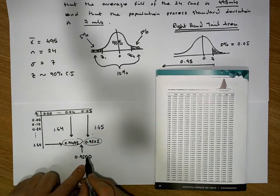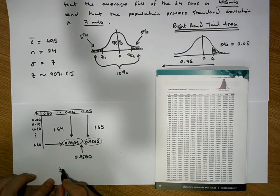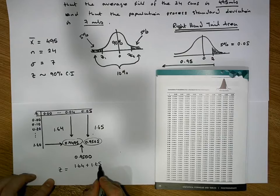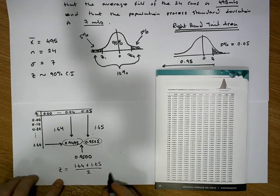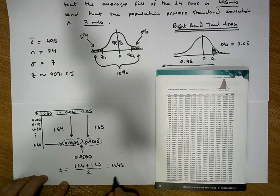The z-score I require is halfway between these two, so the z that I require is equal to 1.64 plus 1.65 divided by 2, which gives us a value of 1.645 is my z-score.